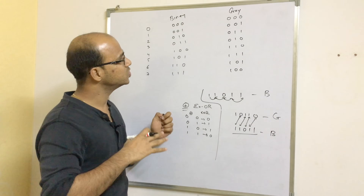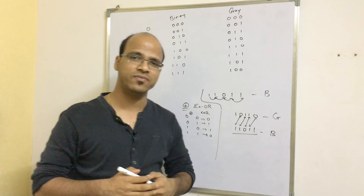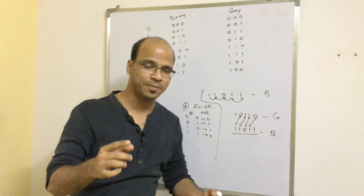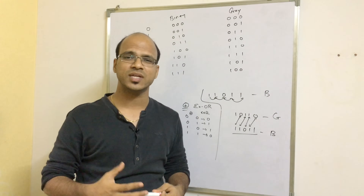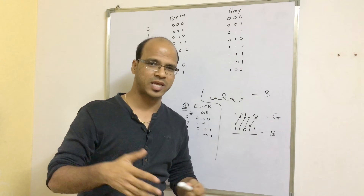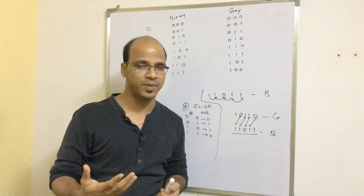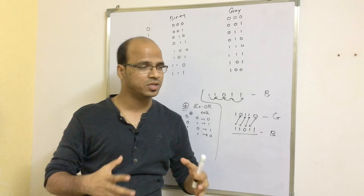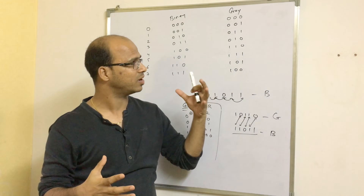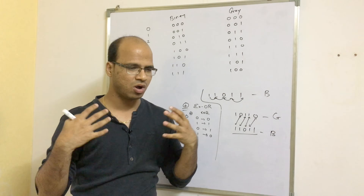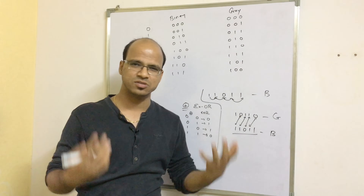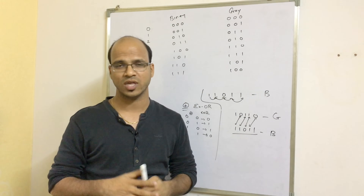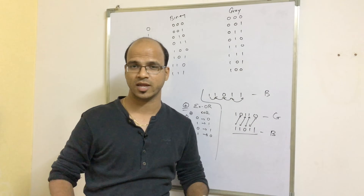That's how you convert a binary number into gray code and back. If you got this, click the like button. If you have any doubts, type in the comment section and I'll make a new video. If you need more videos on topics like binary conversions or XS3 code, do comment. Thank you so much for watching, and do subscribe.